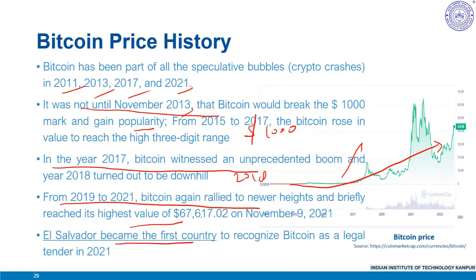El Salvador has been experimenting with Bitcoin as a currency since 2019, and the Legislative Assembly passed a bill in June 2021. In February 2022, Ukraine also announced the legalization of cryptocurrencies, and the Central African Republic passed a law in April 2022 legalizing Bitcoin and other cryptocurrencies. Gradually, country by country, cryptocurrencies and Bitcoin in particular have been adopted. To summarize: Bitcoin has gone from a very small value to values in multiple thousands of dollars, and more and more countries have adopted and recognized its significance.